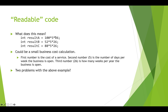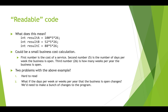The problems with that example are: first, it's hard to understand what it means. But also, what if you decided you're going to be open 30 weeks per year? Then you've got to change this in three spots, and you might change it in two spots, forget to change it in the third, and then your program does weird things with costs that don't make sense. So: hard to read and hard to change or update.